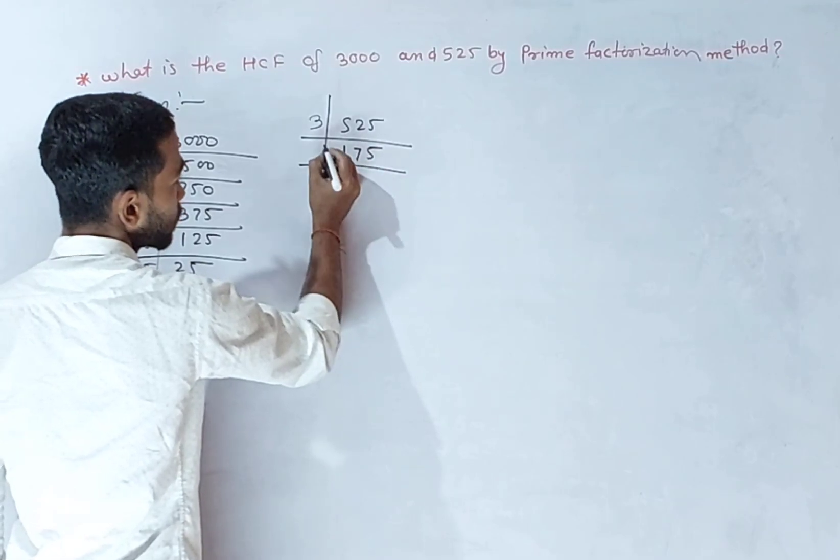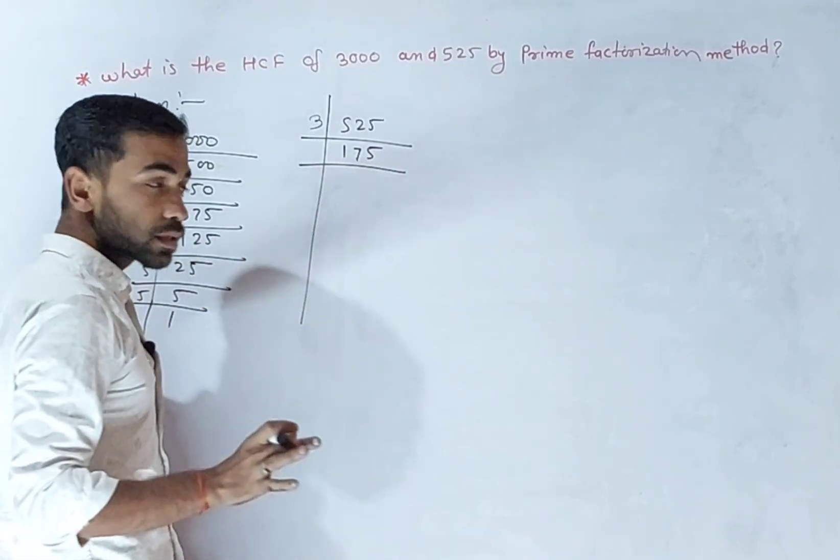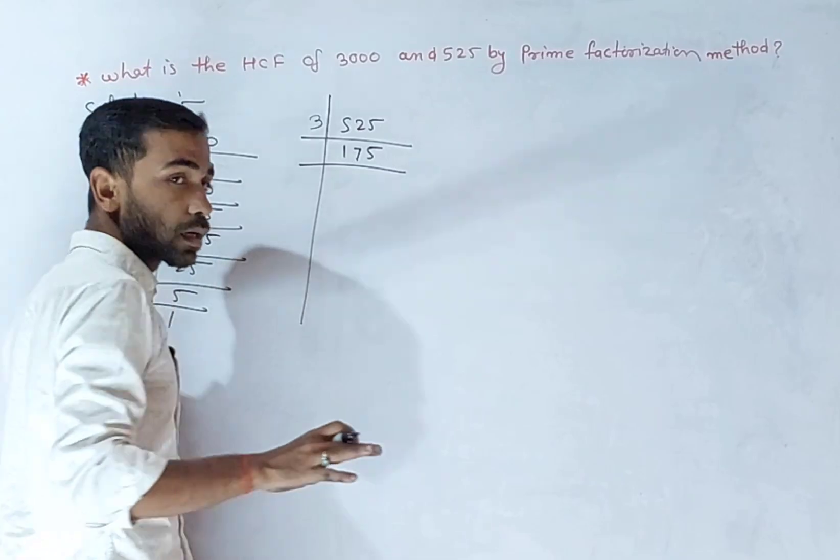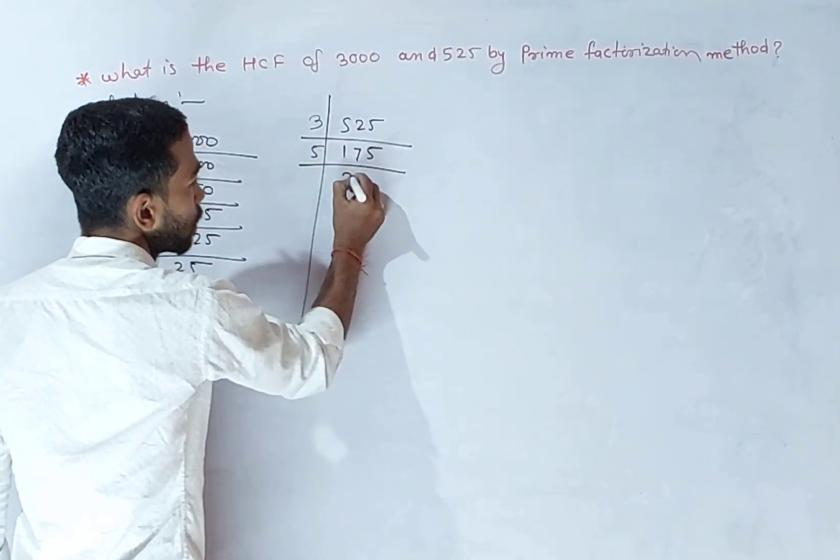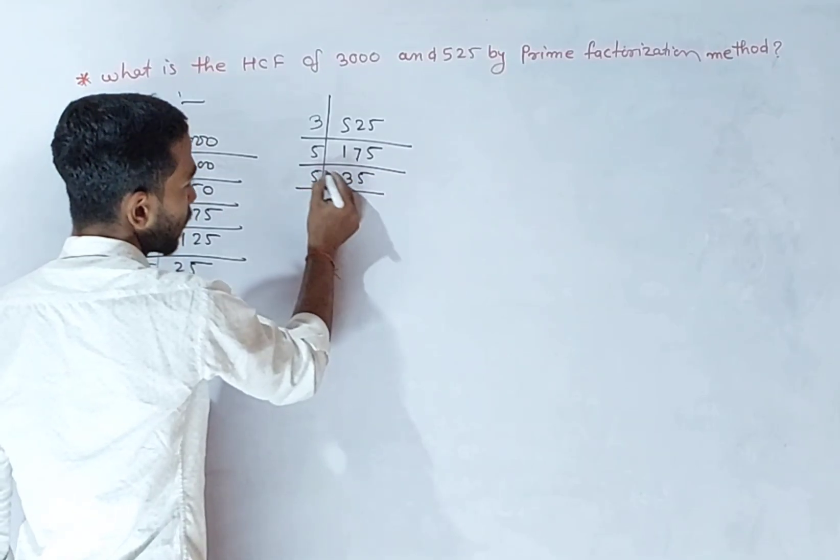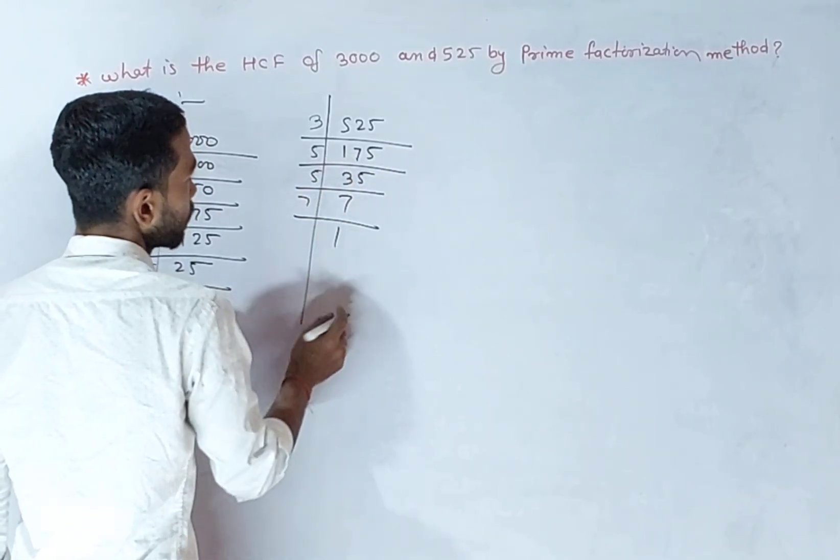7 plus 5, 12 plus 1, 13 is not divisible by 3, so 175 is not divisible by 3. Divide by 5: 35; divided by 5, 7; divided by 7, 1.